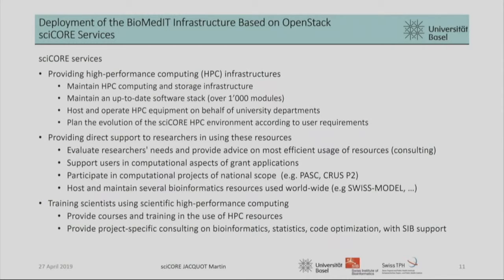Let's have a look at what SciCore is doing. We have mainly three main service areas that we offer. First, we provide high-performance computing infrastructure for the whole university — that means we have an HPC cluster and a storage infrastructure. We maintain a software stack; currently we have over 1,000 modules in different versions. We also host and operate equipment on behalf of university departments — we host three or four groups' whole infrastructure, managing and setting it up so they just take care of their application while we take care of the equipment.